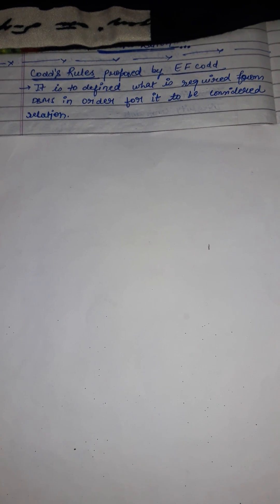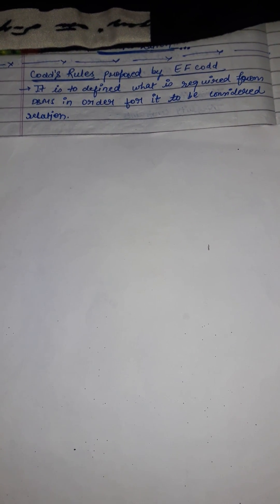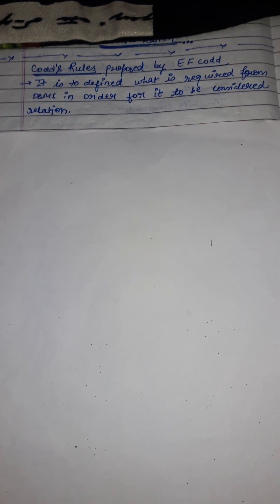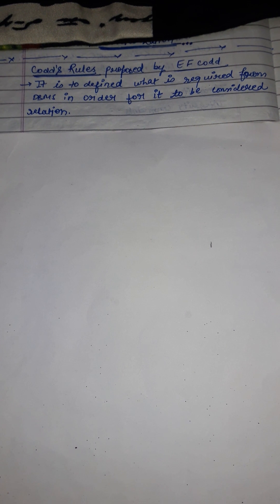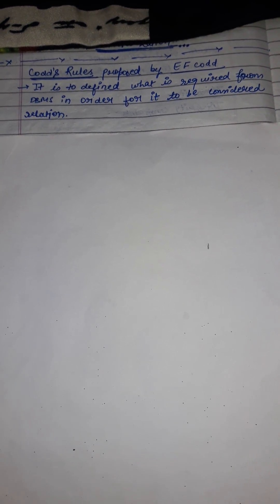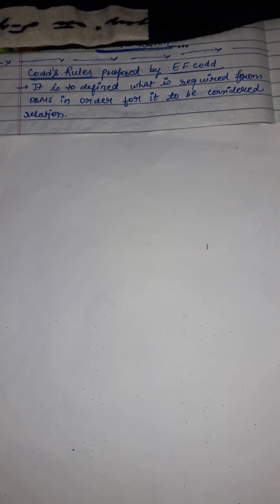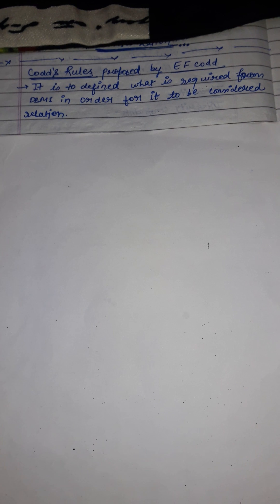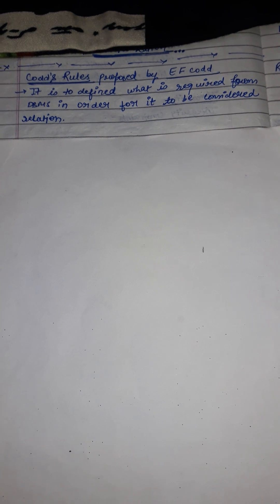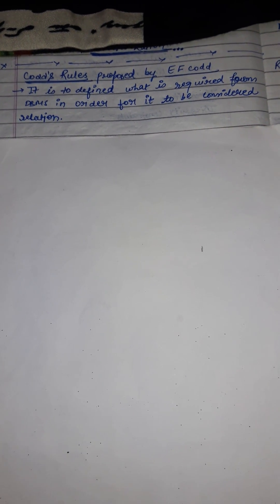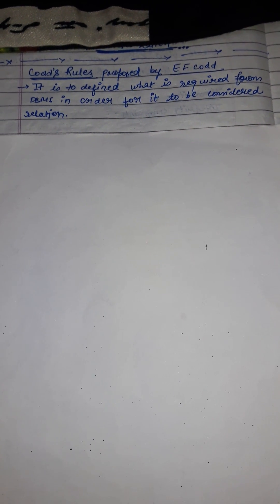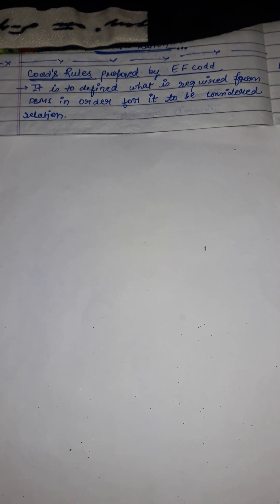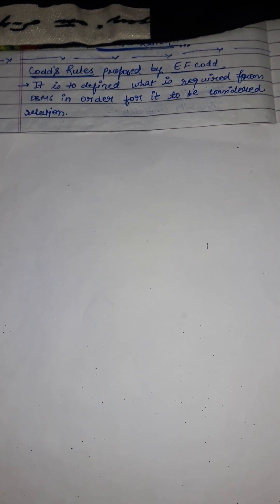In 1985, Dr. Codd published a list of 12 rules that define an ideal relational database, and has provided a guideline for the design of all relational database systems. This guideline defines what is required from a database management system in order for it to be considered relational.